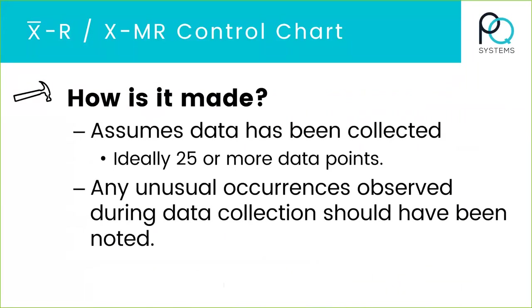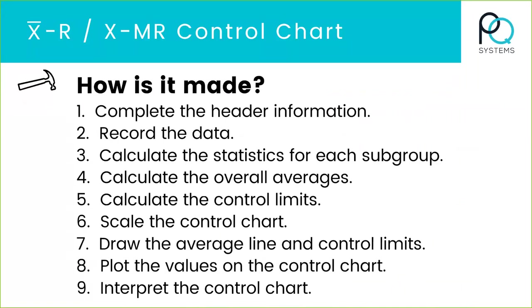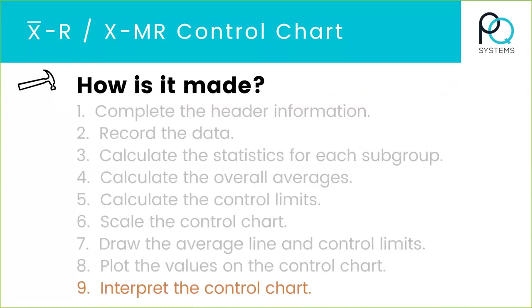How is a control chart made? You get data — usually 25 or more data points — and want to make any notes about the data that was collected. In this short webinar, we're not going to go through all nine steps of how it's made. But I do want to pause on how to interpret the chart. I really should have put a tenth step because the nine steps alone are not value-added. The tenth step — where you react to the information you learned — is where the real value comes in. All of those nine steps are just overhead; the improvement you get by taking action, that's the real value.